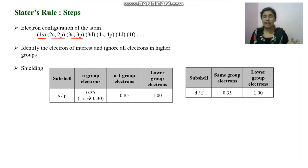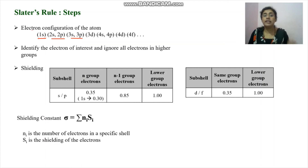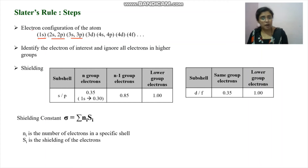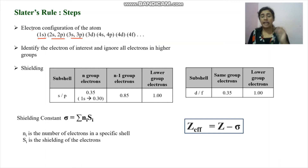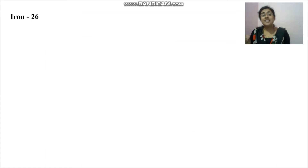After finding the shielding contribution of each inner electron and each electron in the same shell, we sum all contributions — the number of electrons multiplied by their corresponding shielding value — to get the total screening constant sigma. The effective nuclear charge is then calculated by subtracting the screening constant from the expected nuclear charge (the number of protons, Z).